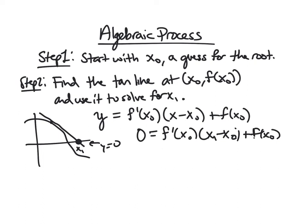And from here, I can just solve. So I subtract over, divide by f prime of x0, and then add x0 to solve for x1. And so you get that x1 is x0 minus f of x0 over f prime of x0.